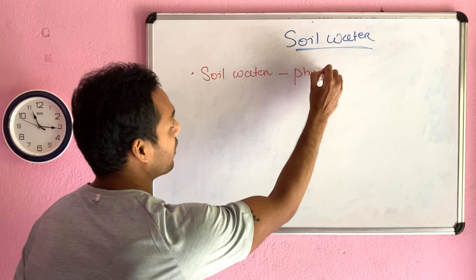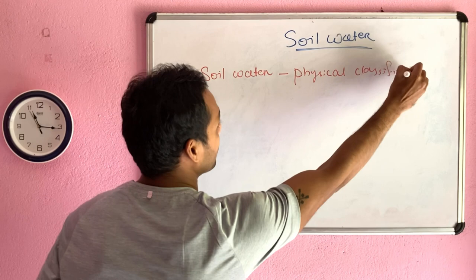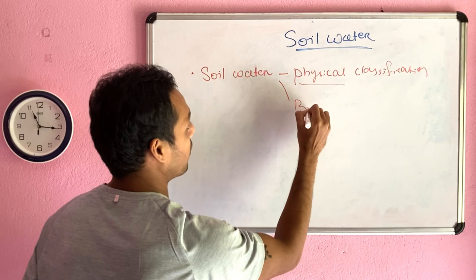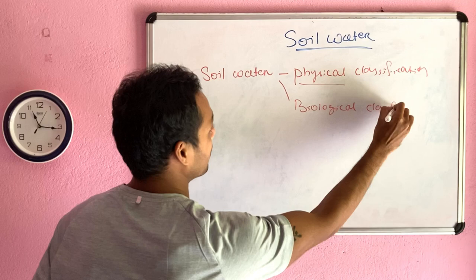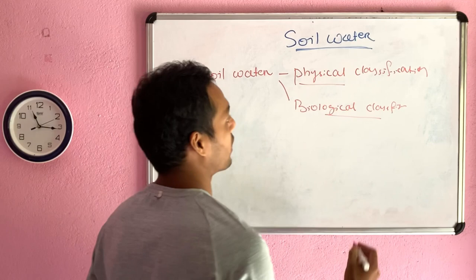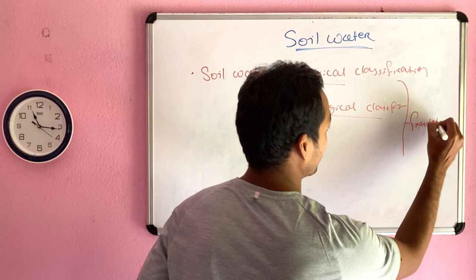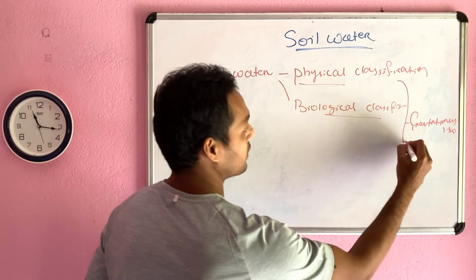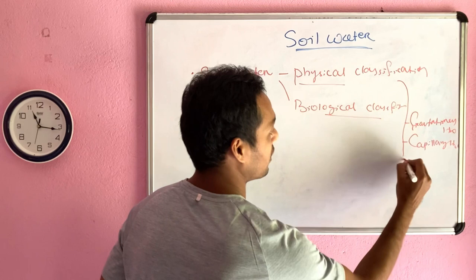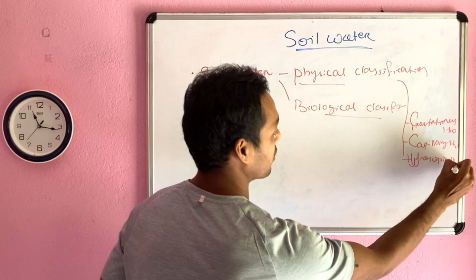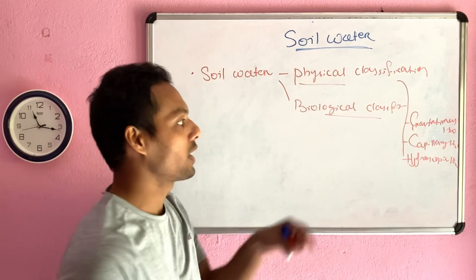Soil water is helpful for mineral translocation. Soil water is classified based on physical classification or biological classification. Based on physical classification, soil water is classified into three types: gravitational water, capillary water, and hygroscopic water.